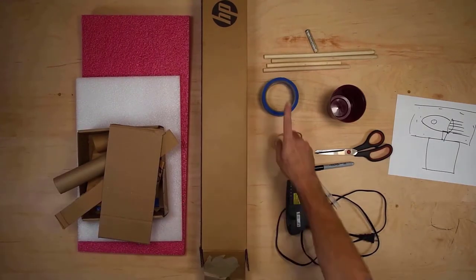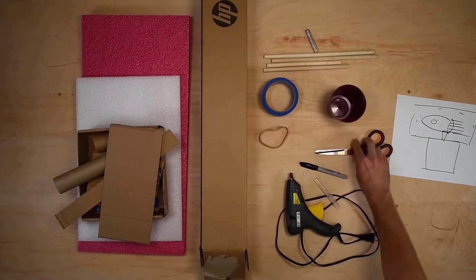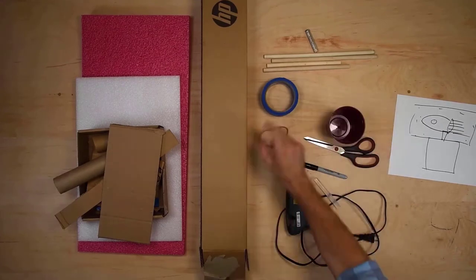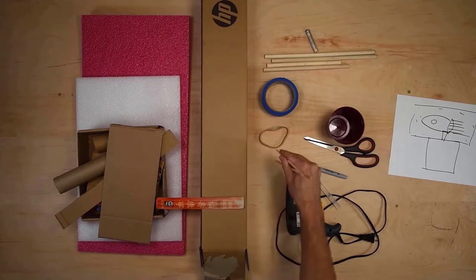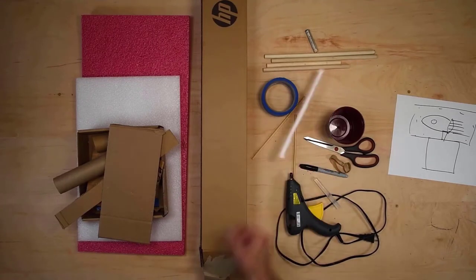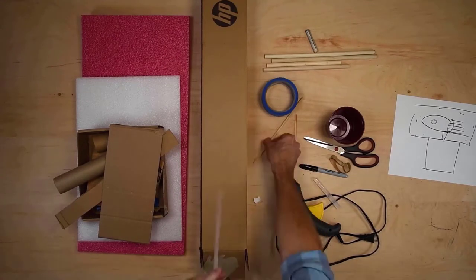So you need a box, maybe some scrap cardboard, some packing material, hot glue, tape, something to cut with, something to draw with, a circle to use for tracing, some dowel rods or chopsticks, and a straw.